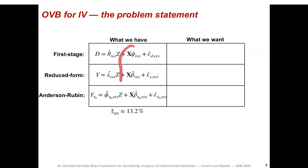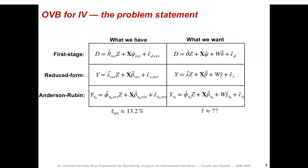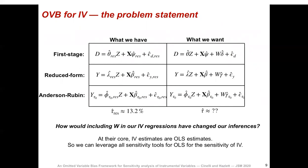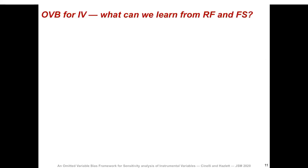Note that these regressions control for X only, so although they are the regressions we have, they are different from the regressions we want. The regressions we actually want would further adjust for W in these full regressions. How would including W in our IV regressions have changed our inferences? This is the main question we'd like to answer. Since IV estimates are just OLS estimates, we can leverage all sensitivity tools for OLS — and we start with the simplest sensitivity analysis: the sensitivity analysis of the reduced form and first stage regressions.